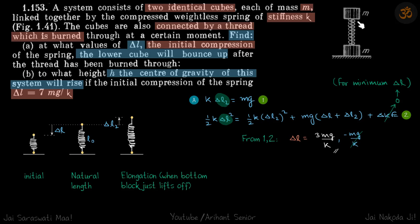We are given two blocks. Block one is pushed down on a spring and then connected with block two with a thread. Initially the spring is in a compressed state. When we cut the thread, we need to find: at what values of compression δl will the lower cube bounce up, and second, what height the center of gravity of the system will rise if the initial compression δl is 7mg/k.